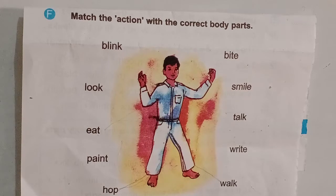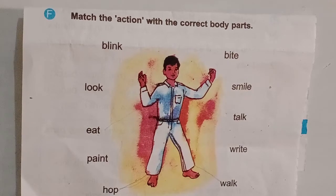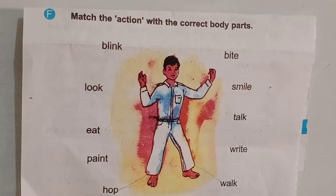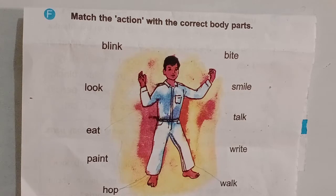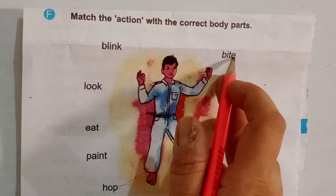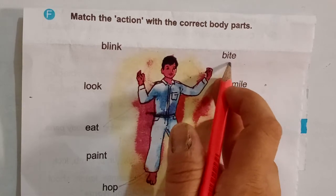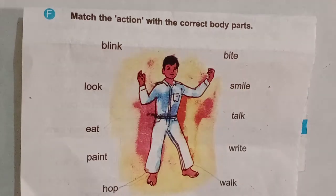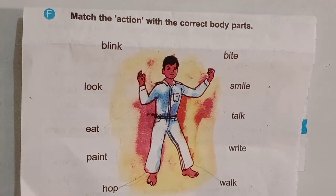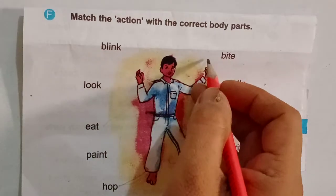Let's start the work. In this portion, we will match the actions with the correct body parts. For example, what is this? This is 'bite'. Children, where do we take a bite? How can we take a bite? We take the bite with our mouth.